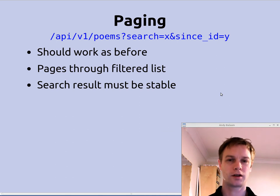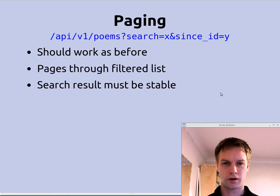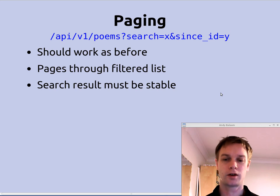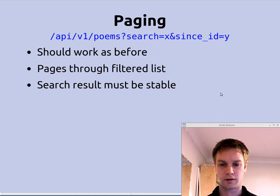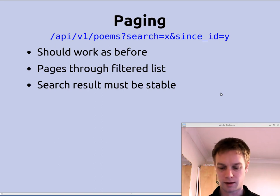We looked at paging last time — how would paging work in the presence of search? Basically you can just combine the two together. You search on a search term and then provide a since_id and a size to say how many results you want back. Instead of paging through the whole list, you're paging through this filtered list created by the search. For this to work, the search results must be reasonably stable — if you run the search again a bit later it should produce pretty much the same results in pretty much the same order. You should see the first results on the first page and the second results on the second page, rather than seeing half of them again and missing others.